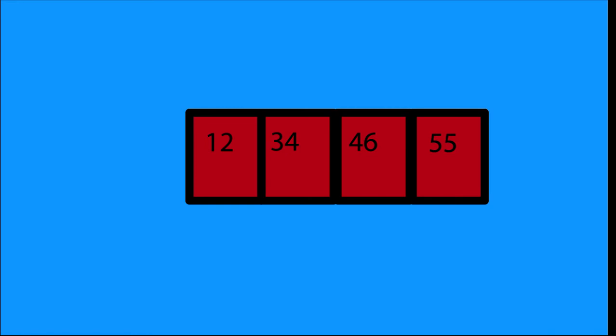Insertion sort works by looking at each item in the array one by one and then swapping it to the left if it is less than the number to the left of it. If it's the greatest element, you can just leave it be.